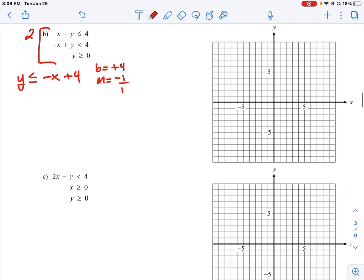Then for our second equation we are going to have y is less than, and we're going to add x to both sides. So just make that as plus x or x by itself plus 4. And again in this equation we know b is equal to plus 4 and m is just equal to 1 over 1.